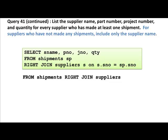Here is the example of a right join. In this case, the shipments table is on the left and the suppliers table is on the right. But we still want all suppliers — that is why we say this is a RIGHT JOIN.